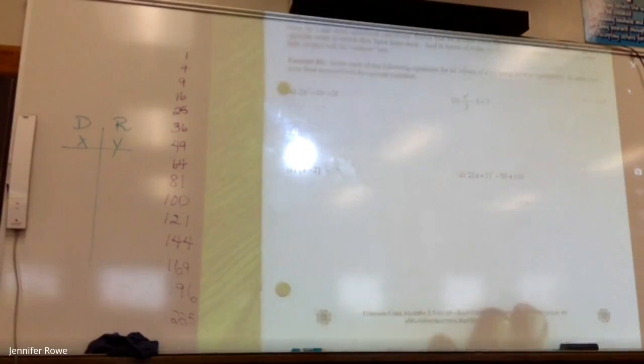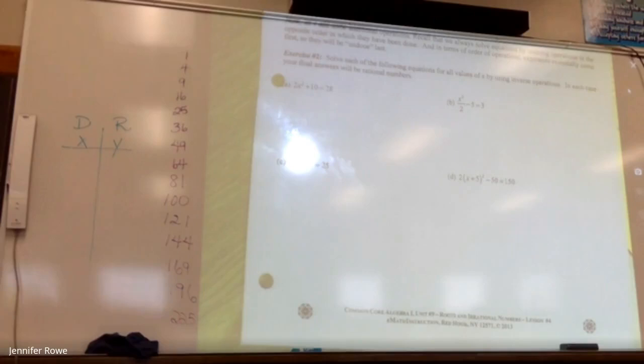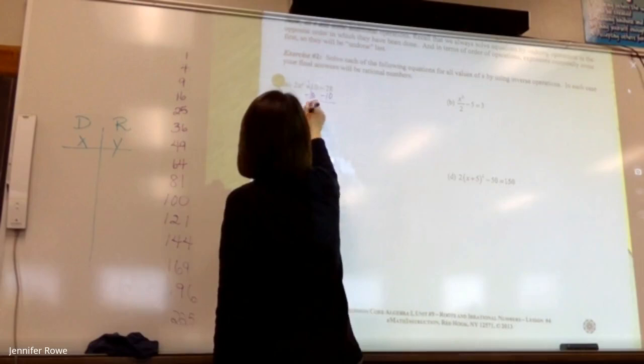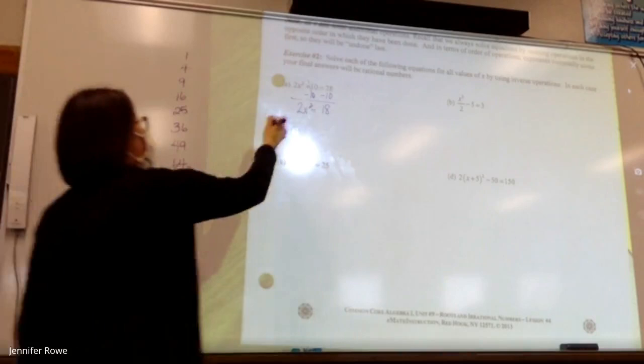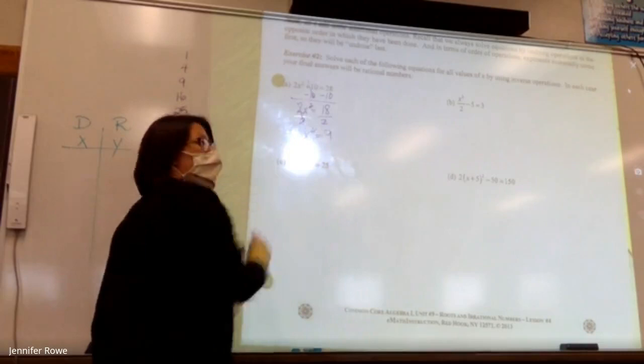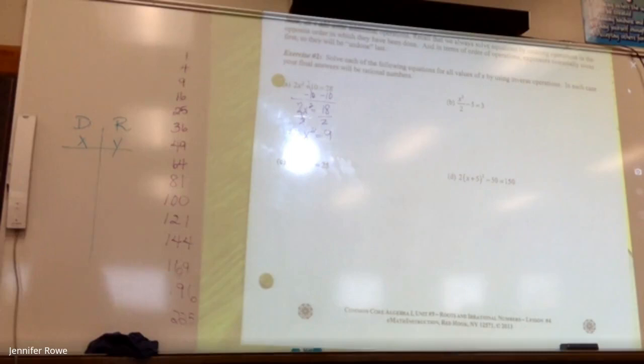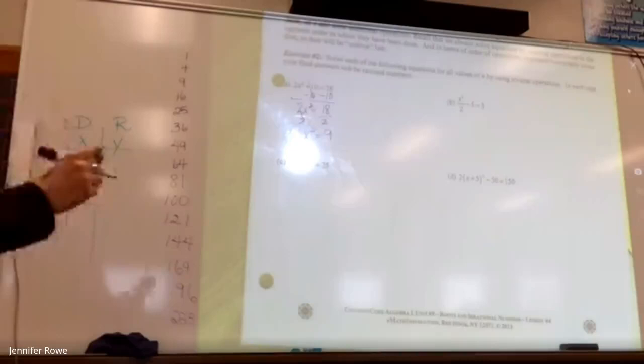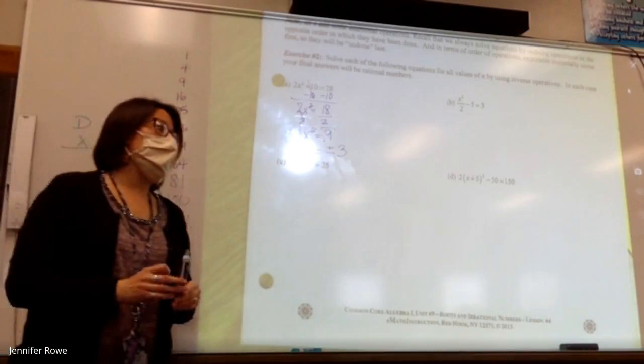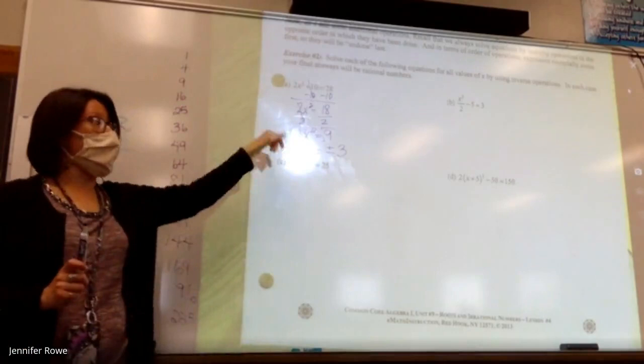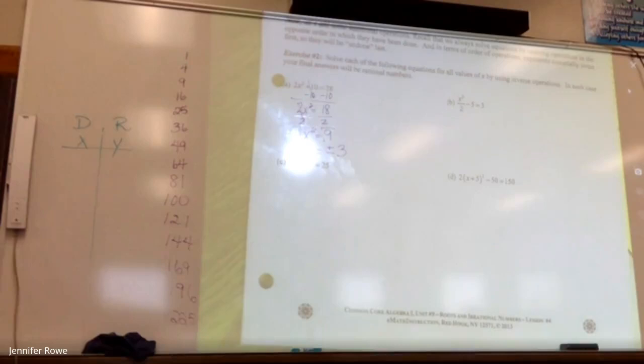Solve each of the following equations for all values of x. In each case, your final answer will be rational. What does that mean? They end or they repeat. Okay, so letter a, what do we need to move first? You're going to solve it, you want to get that x by itself. What do we need to move first? Divide by two. Okay. Is the x squared all by itself? Yes. Now you're ready to take the square root. What is the square root of 9? Positive and negative three.